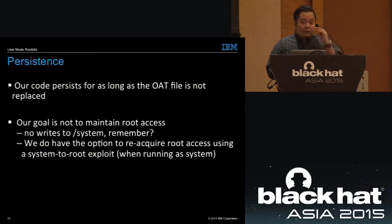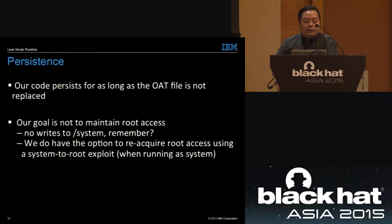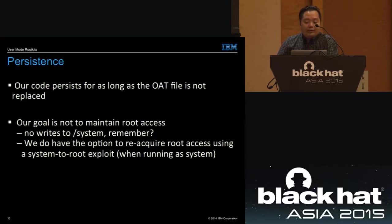For example, if our code runs under the settings app, it will have a system UID and can obtain permissions not available to regular apps, such as the ability to reboot, write secure settings, mount/unmount file systems, or clear application user data. Regarding persistence: our code persists as long as the OAT file is not replaced. The OAT file is only replaced upon an OTA update or when that application is updated. We also have the option to reacquire root access using a system-to-root exploit if code is running under system privileges.